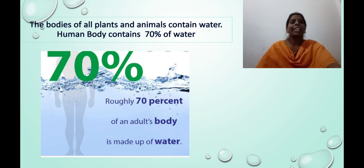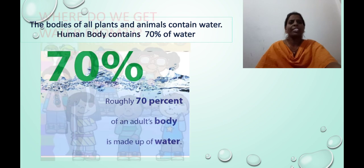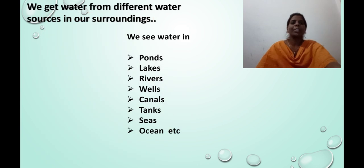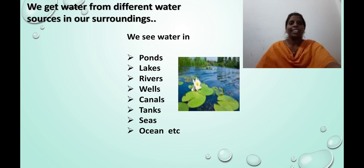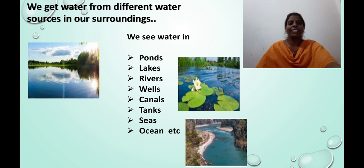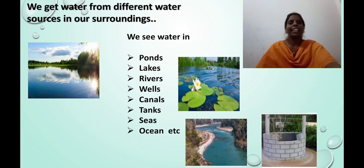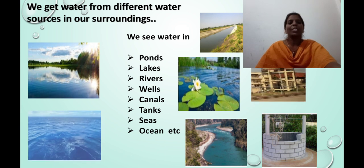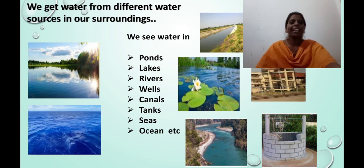Human body contains 70% of water. Okay, children, do you know where do we get water from? We get water from different water sources in our surroundings. We see water in ponds, lakes, rivers, wells, canals, tanks, seas, ocean, etc.